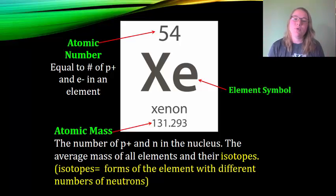Just a little bit of a review of the parts of the individual elements, the squares of the periodic table. We have the atomic number at the top, which is equal to the number of protons and also equal to the number of electrons in the atom. Then you have the element symbol, the one or two letters that are really big. So capital X lowercase e for xenon. Notice it's not capital X capital E, it's always that lowercase if there's a second letter.